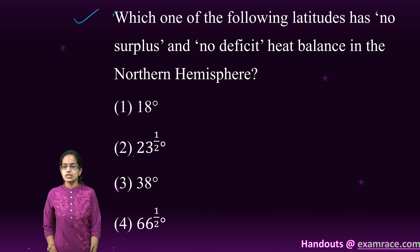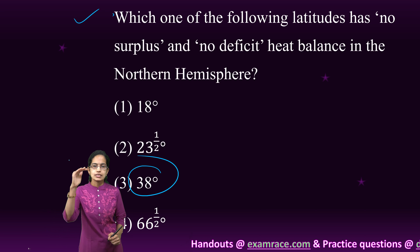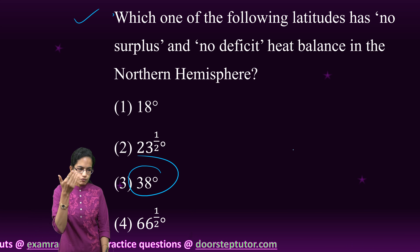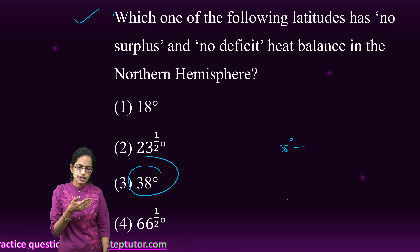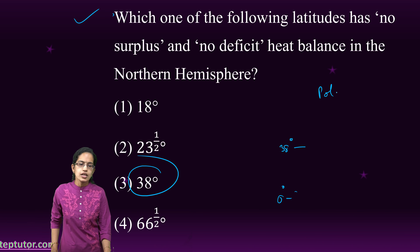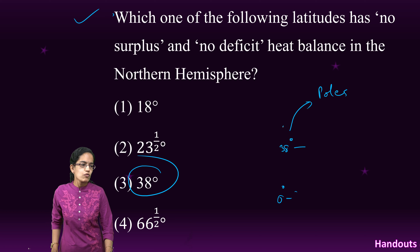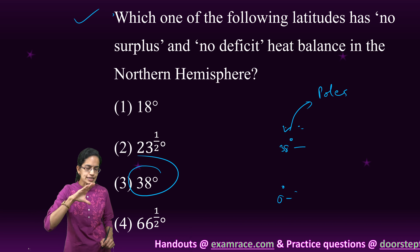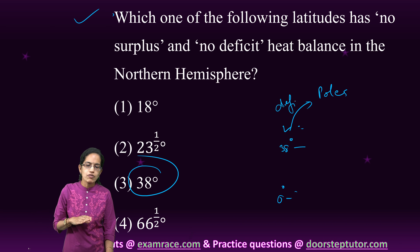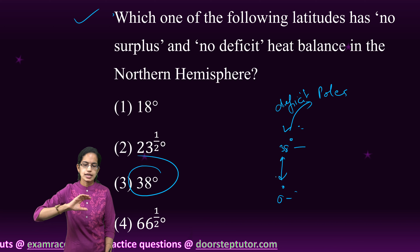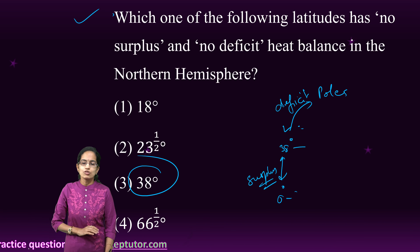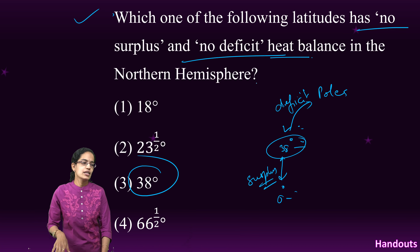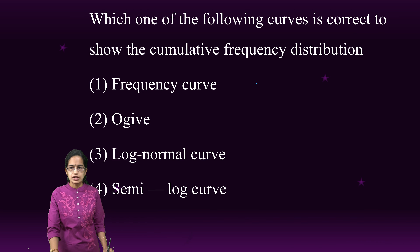This is a very interesting question. 38 degrees north and south is considered the latitude of no surplus and no deficit in heat balance. The region from 38 degrees to the poles receives less insolation, resulting in a net deficit of heat. However, the region between the equator and 38 degrees has a surplus of heat. So 38 degrees is a zero balance or zero net radiation zone — very interesting.